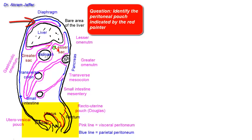The peritoneum of the abdomen is continuous with that of the pelvis — it is as if it is draped over the pelvic viscera, which are located outside the peritoneum. The posterior vaginal fornix is the only part of the vagina related to the peritoneum. The urinary bladder has only its superior surface related to the peritoneum in the female.